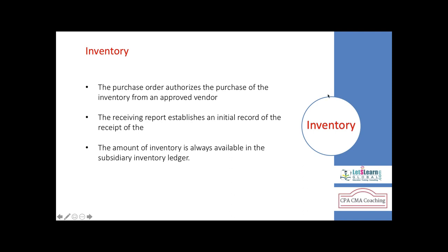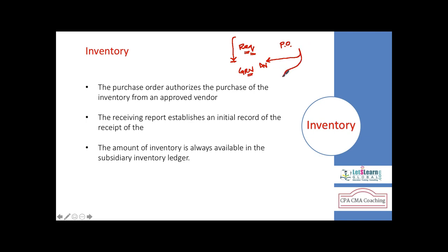We use documents to receive inventory into our stores. We make a requisition when inventory falls to a minimum stock level or reorder level. Then we place a purchase order so the vendor sends goods with a delivery note. The receiving clerk in the warehouse prepares a goods receipt note. The vendor then sends an invoice to the accounts payable department, which is entered into the system.